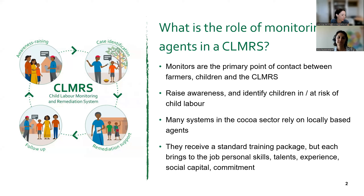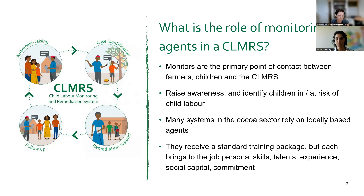These systems aim to identify cases of child labor, provide remediation support to children in child labor or at risk, and follow up to make sure their situation has improved. The agents are the frontline communicators — the primary point of contact between farmers, children, and the CLMRS. When they visit farmers in their homes, this is typically the very first occasion on which the farmers learn about the CLMRS and its objectives.